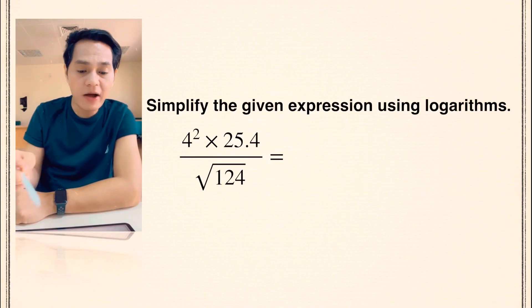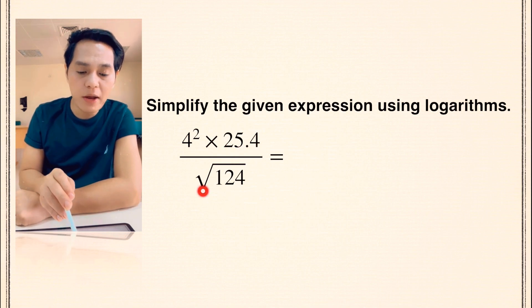Here's the problem. Simplify the given expression using logarithms: 4 squared times 25.4 divided by the square root of 124.